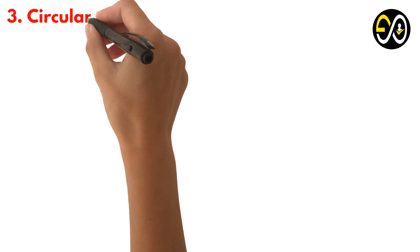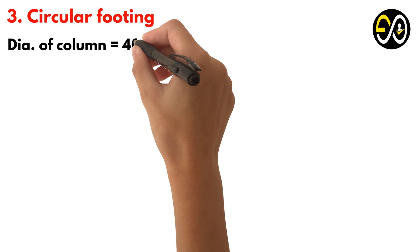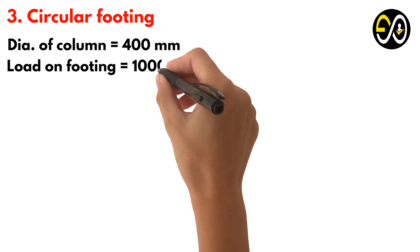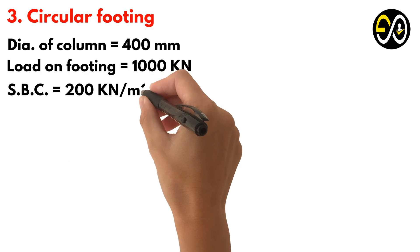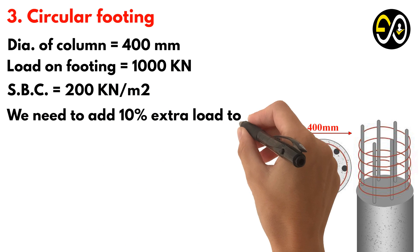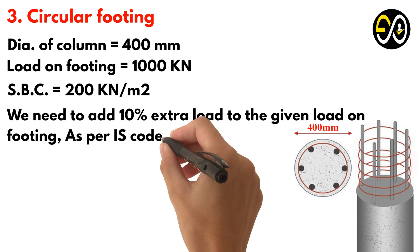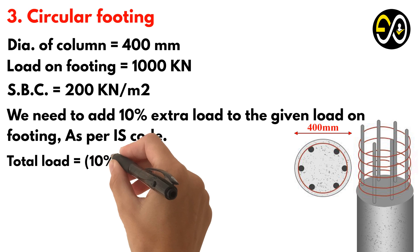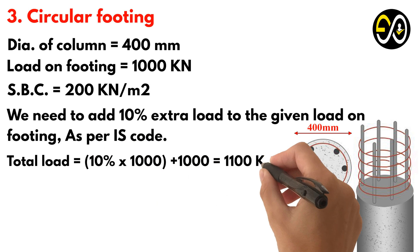Problem 3: Circular Footing. Diameter of column equals 400 mm. Load on footing equals 1,000 kN. Safe bearing capacity equals 200 kN per square meter. We need to add 10% extra load to the given load on footing, as per IS code. Total load equals 10% of 1,000, plus 1,000, equals 1,100 kN.